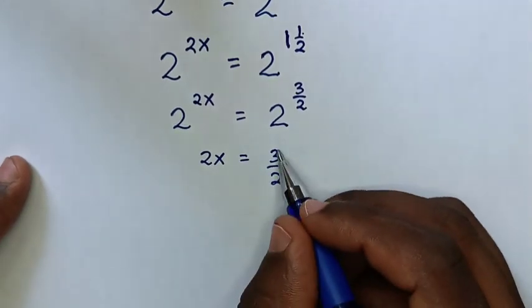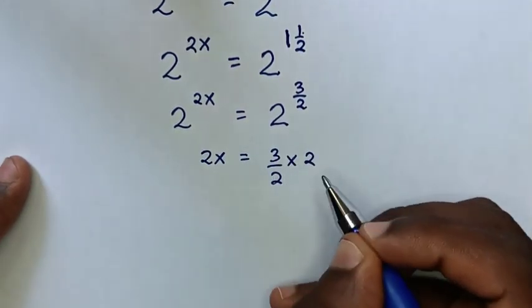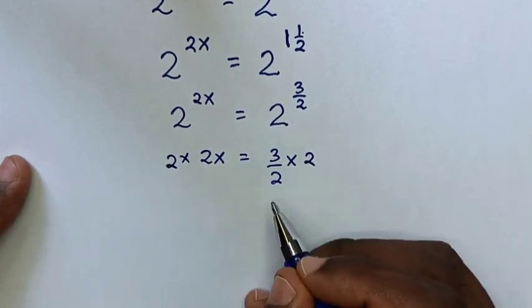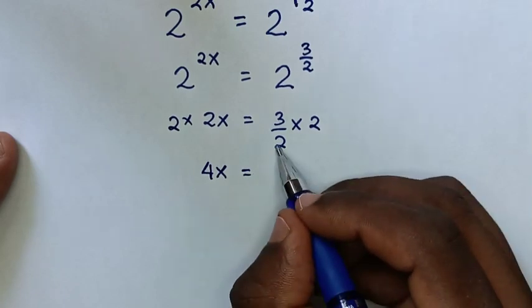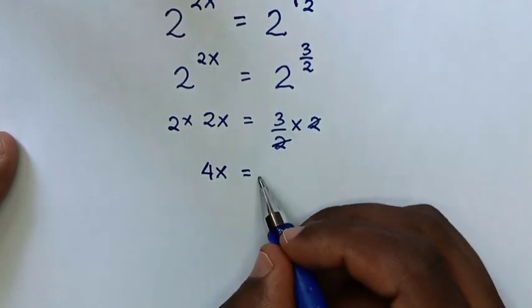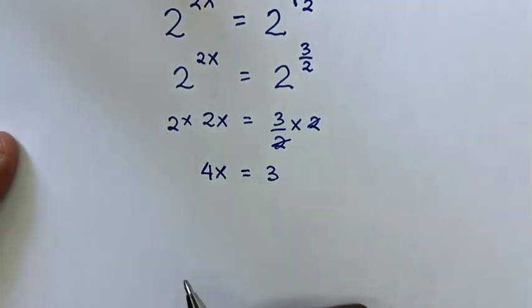Then, to remove this fraction, we'll multiply by 2 on both sides, so this time this is 4x equals, this and this will cancel, so it will be 3.